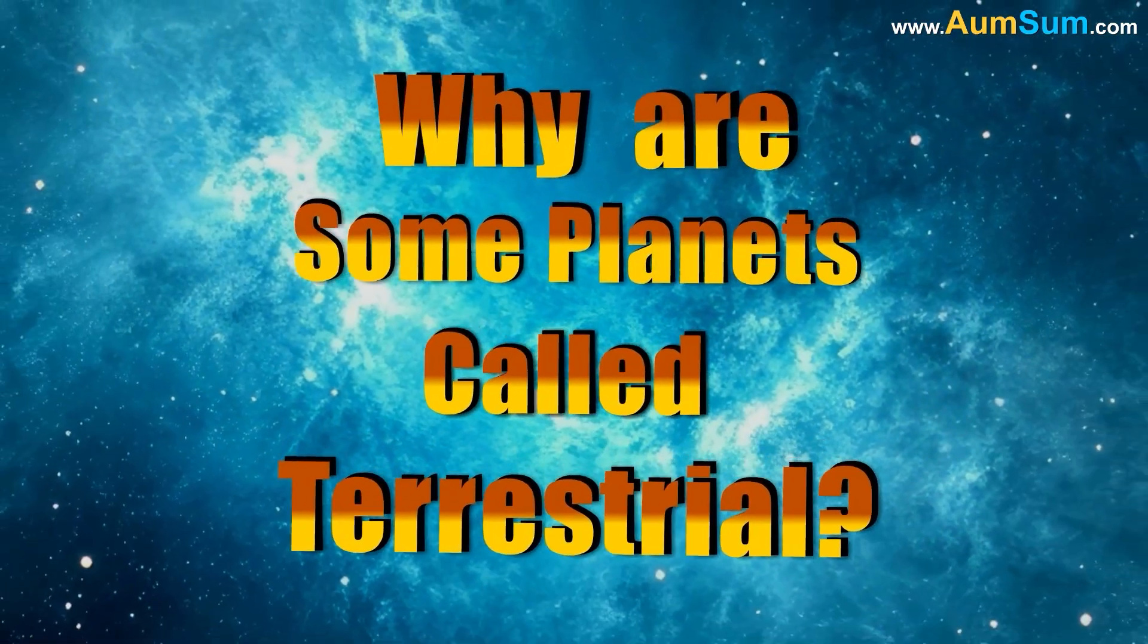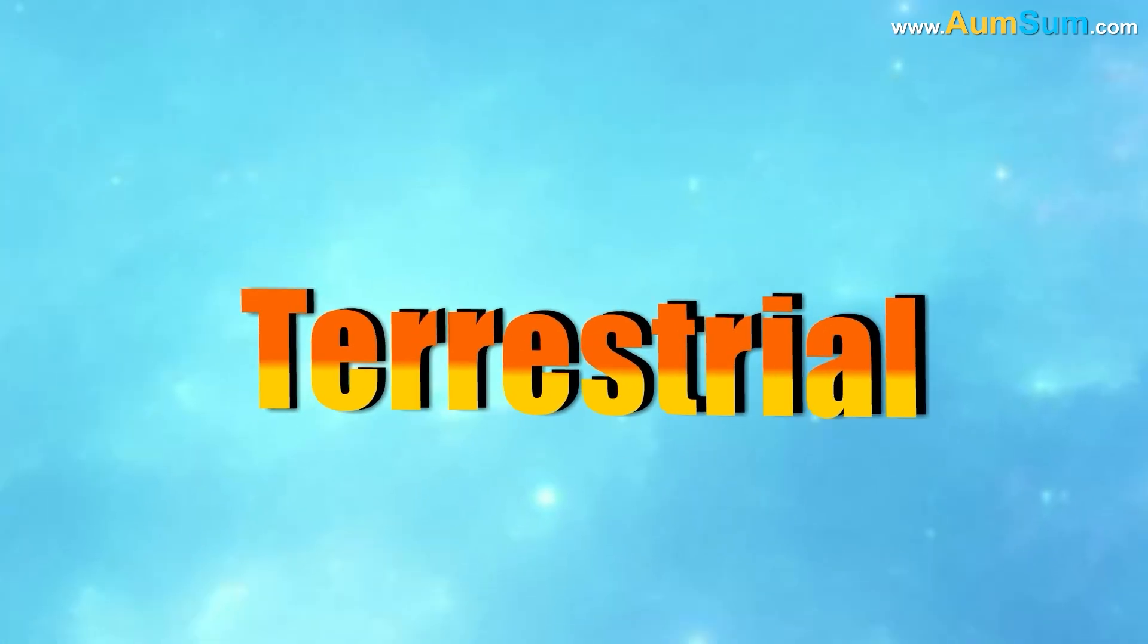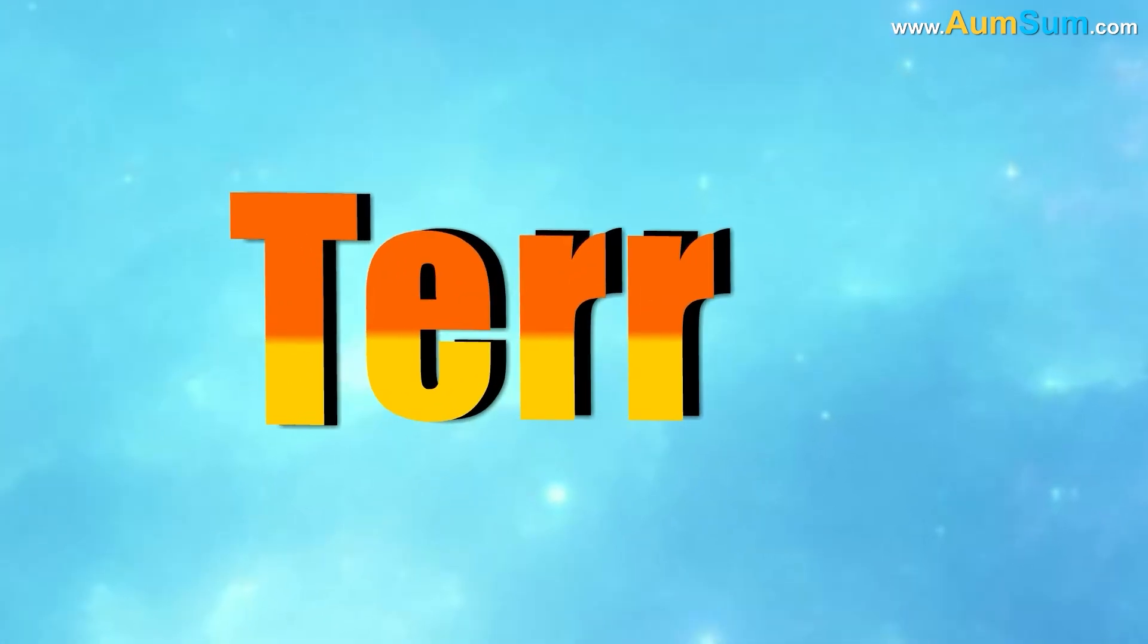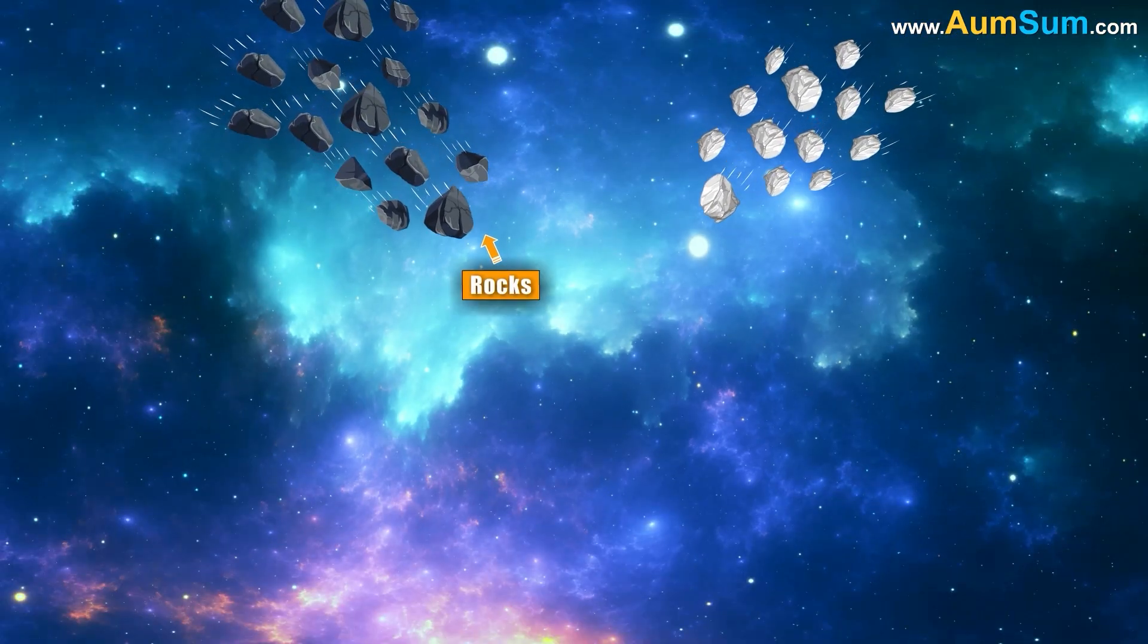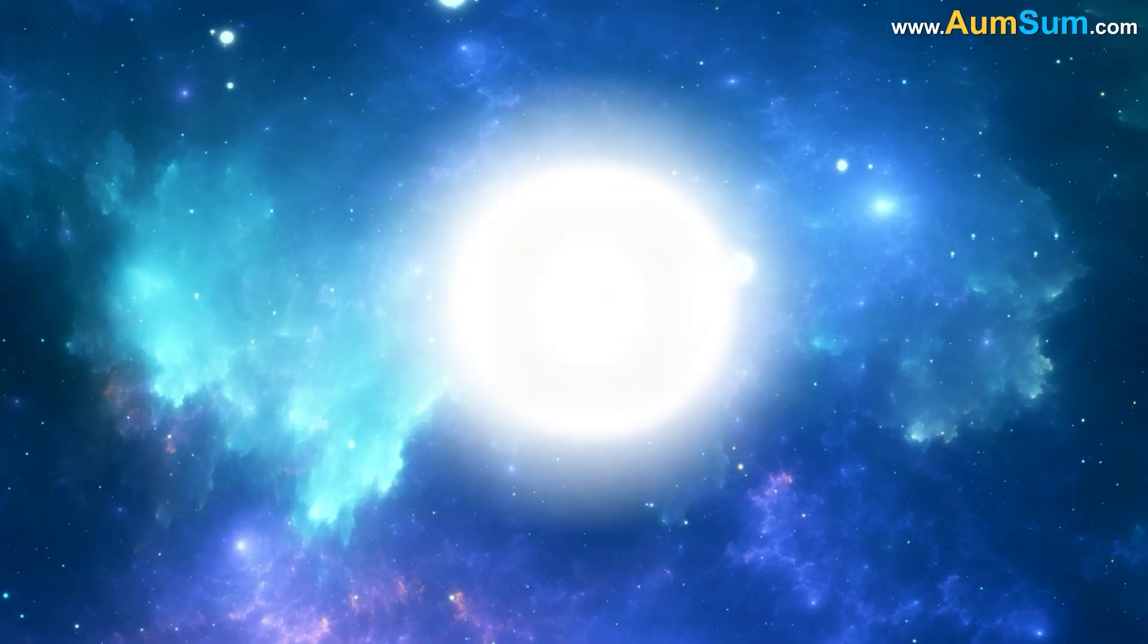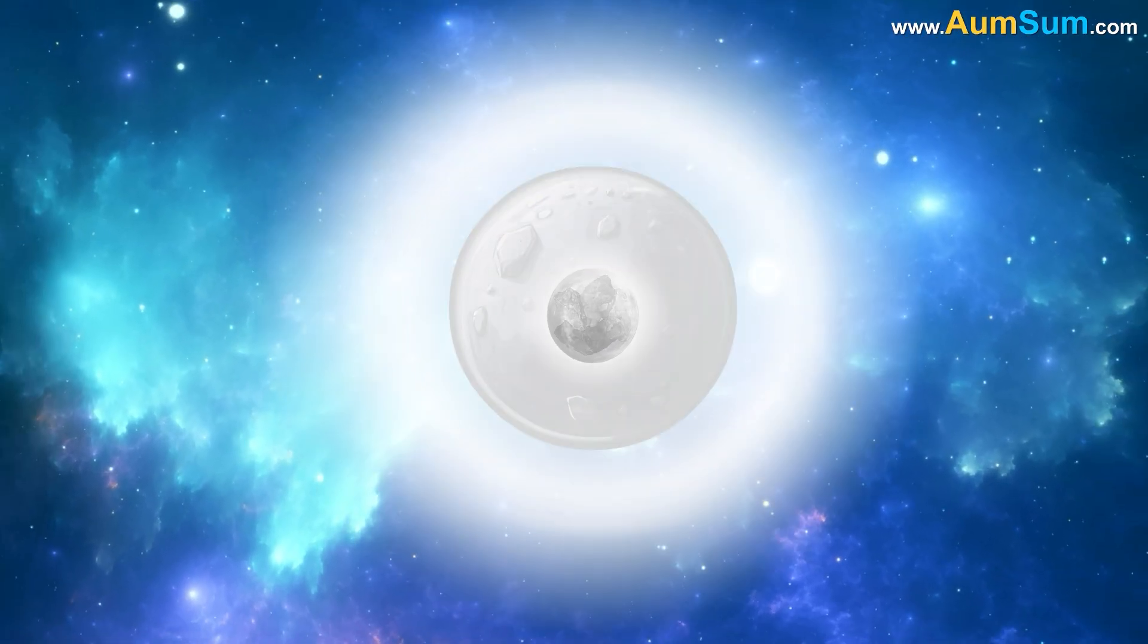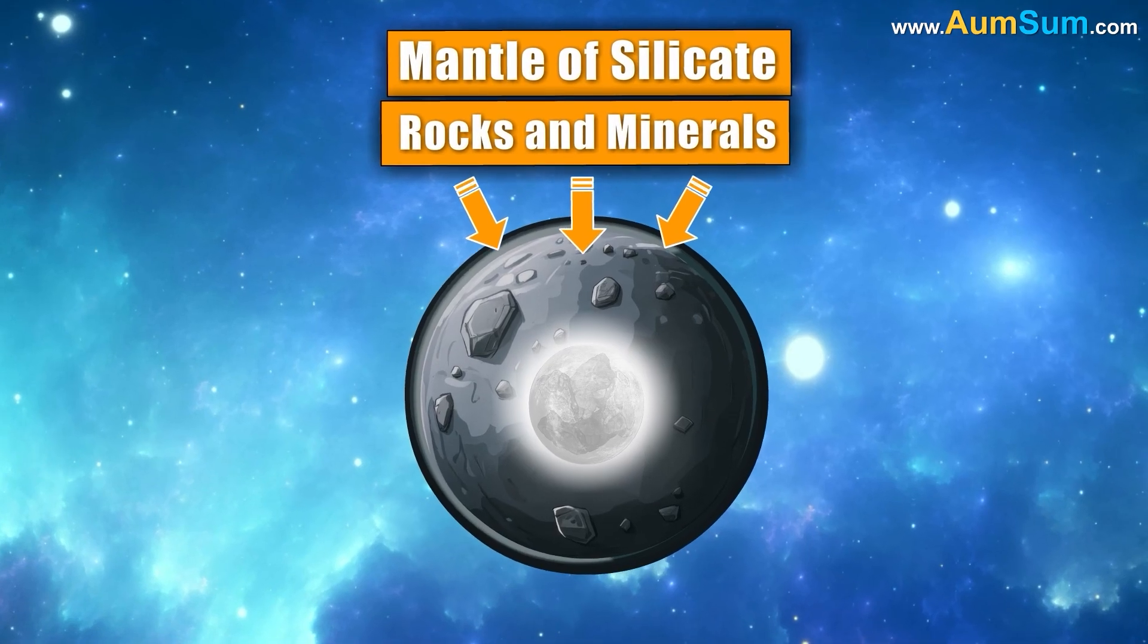Why are some planets called terrestrial? The word terrestrial comes from the Latin word terra, which means Earth. Terrestrial planets are made of rocks and metals and have a central metallic core surrounded by a mantle of silicate rocks and minerals.